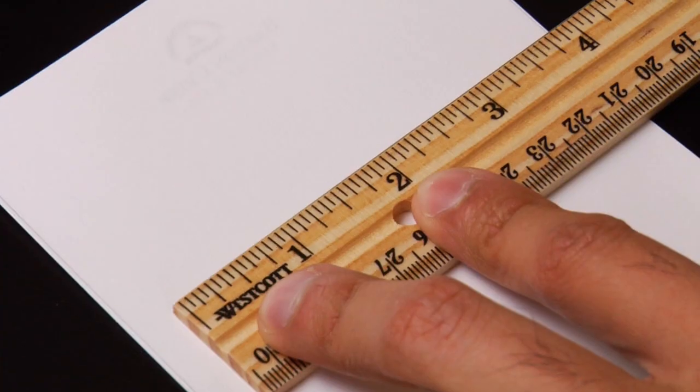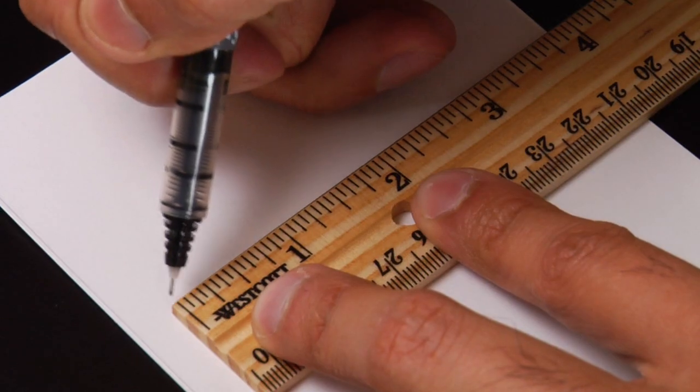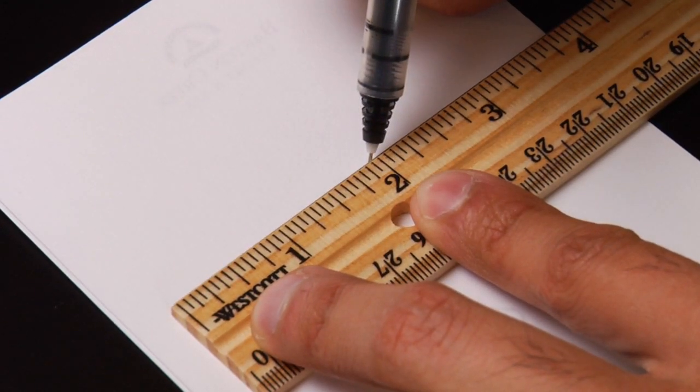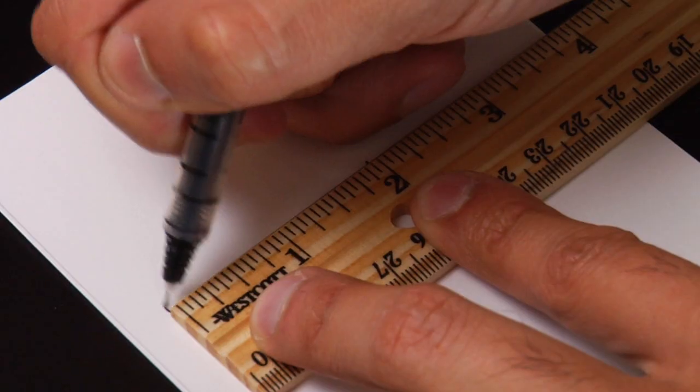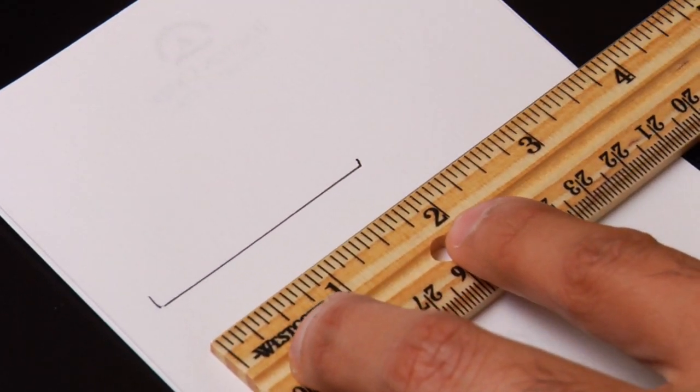So we'll go ahead and draw that for you. We start at the zero and we go all the way to two. And this illustrates for us a line that's two inches long.